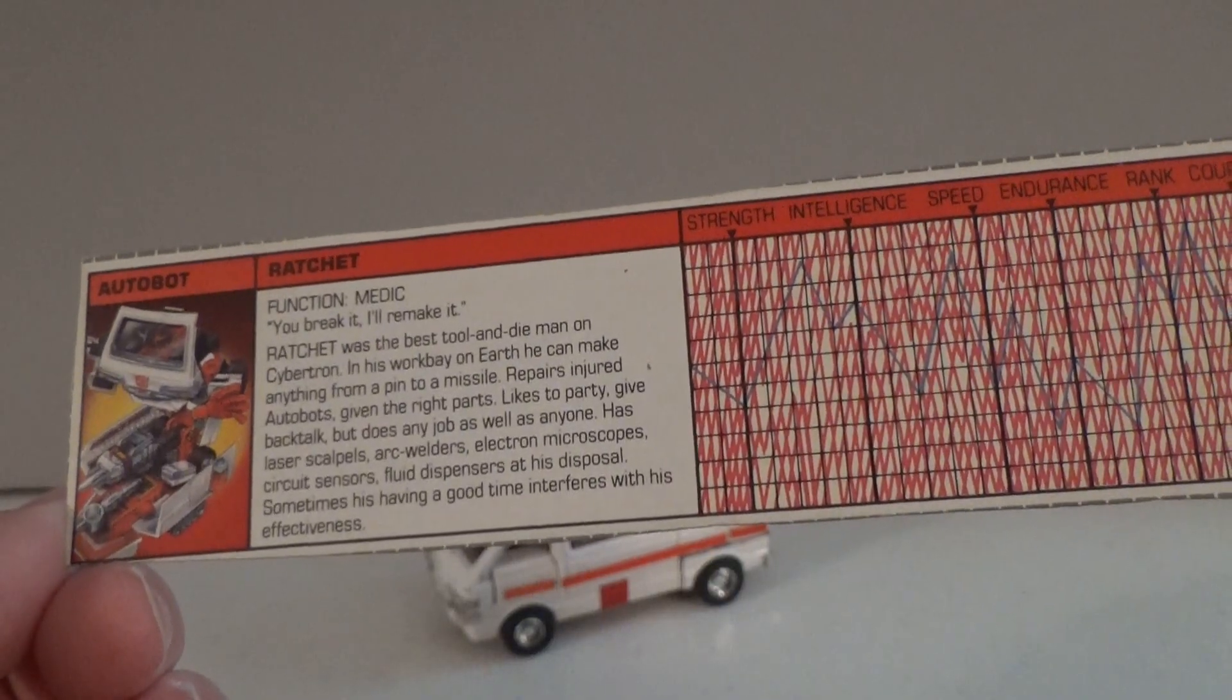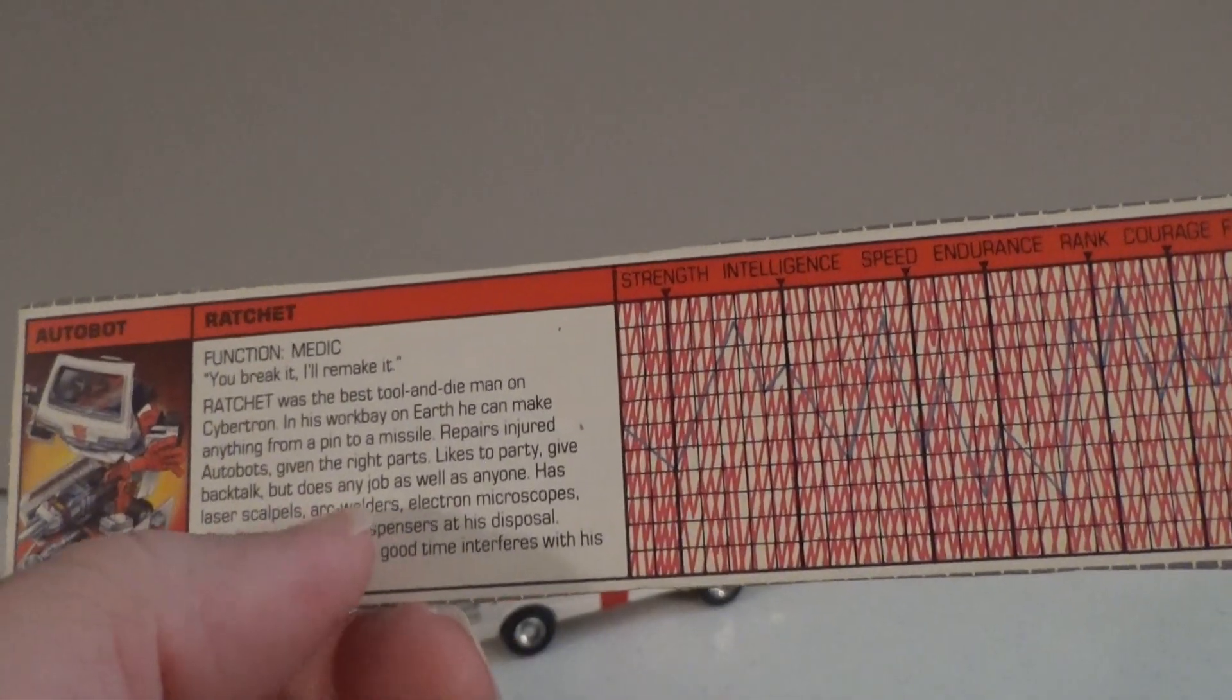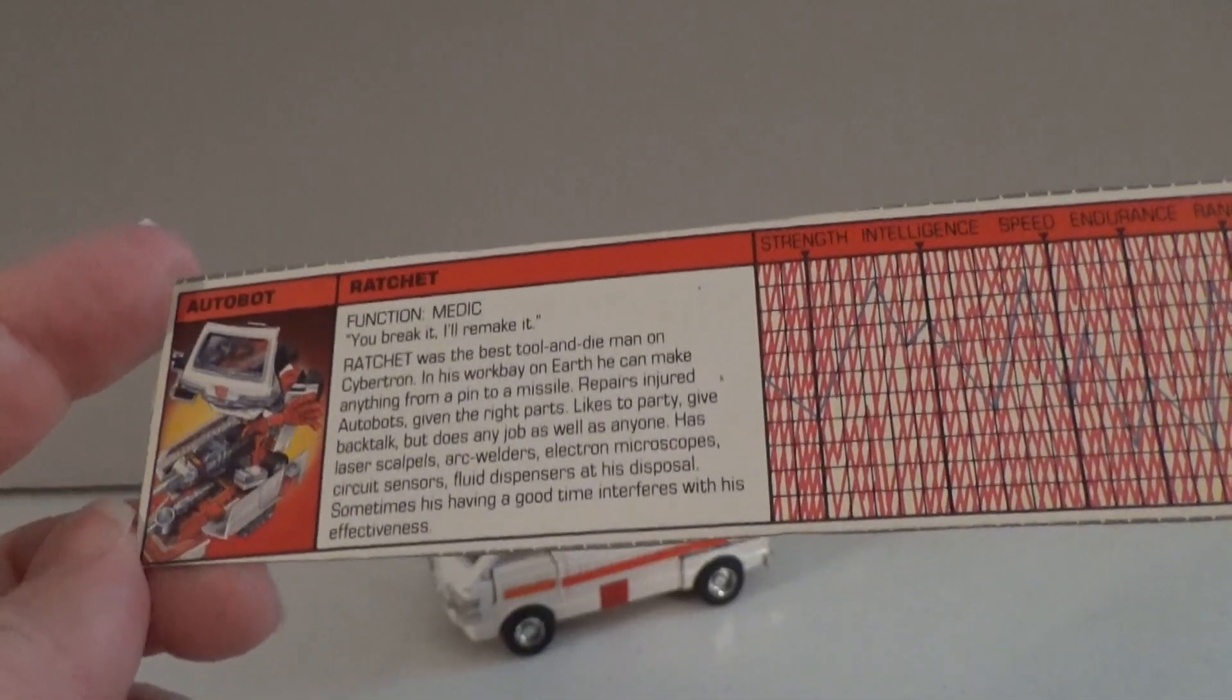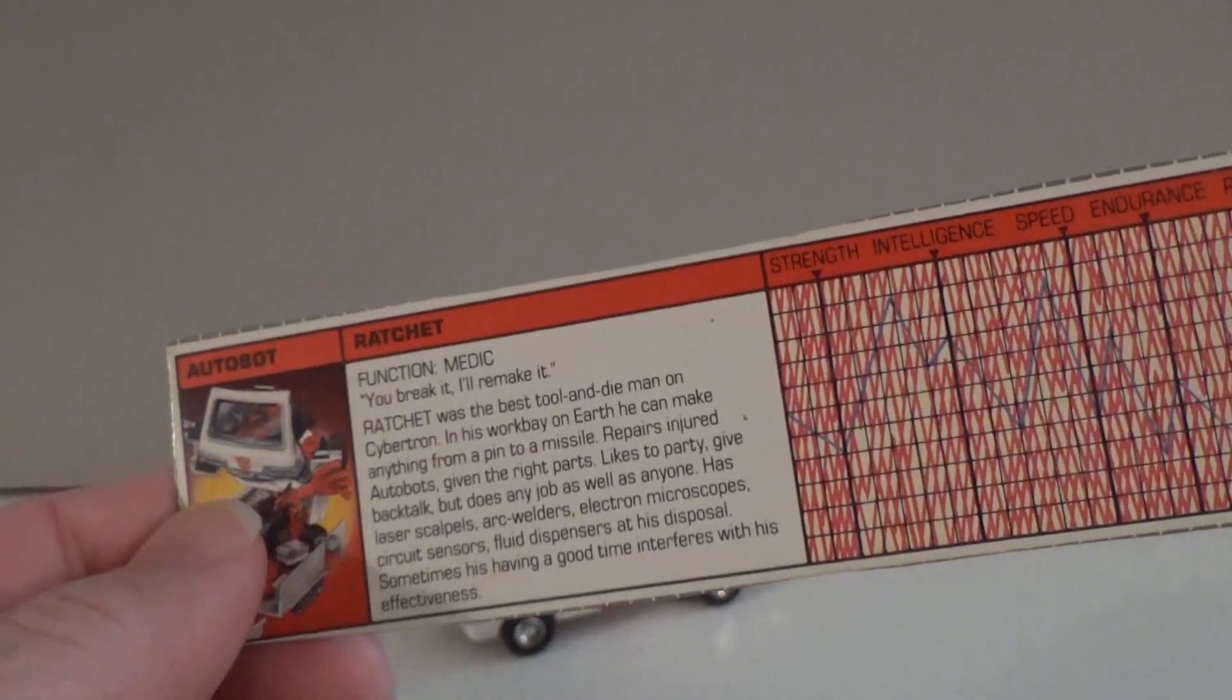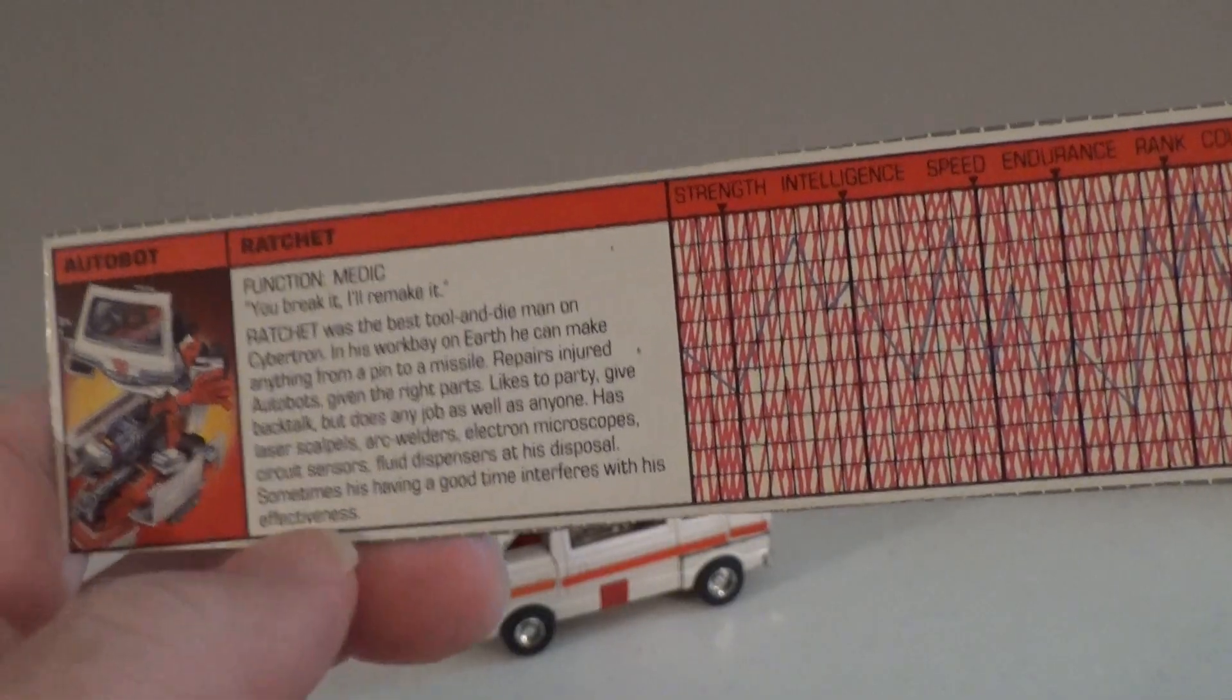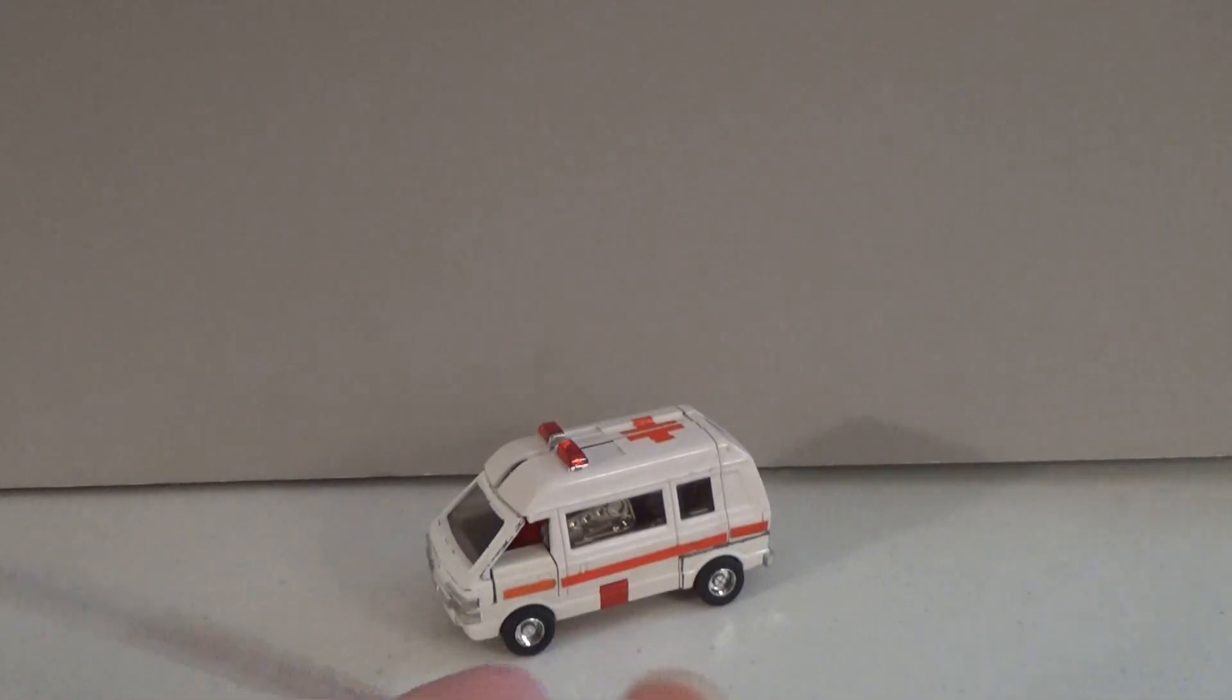He has laser scalpels, arc welders, electron microscopes, circuit sensors, fluid dispensers at his disposal. Now, it's interesting here that they bring up some of his medical tools, because he does have some of his laser scalpels in his arm. And supposedly, in one of the comics, when he was captured by Megatron, he was able to use them against Megatron to briefly get free. While naturally Megatron was not thrilled at this, he did admire Ratchet's ingenuity and his bravery to do that. Sometimes his having a good time interferes with his effectiveness. Well, that's probably true of most doctors, especially if they've been out partying, and then all of a sudden have to be called to the ER. How many times have we seen that on our medical dramas? With how much it's been done, there's got to be some basis in fact on that.